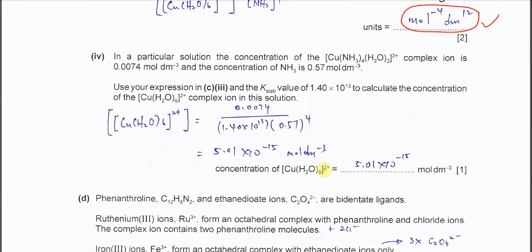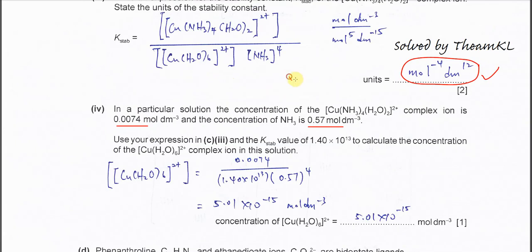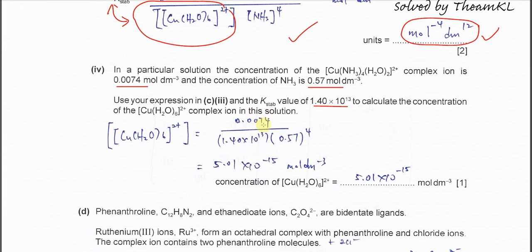Part four: in a particular solution, the concentration of the tetraamine diaqua copper(II) ion is 0.0047 mol dm⁻³ and the concentration of ammonia is 0.57 mol dm⁻³. Using the Kstab expression from part three and the given Kstab value, rearrange to calculate the concentration of the hexa aqua copper(II) ion. Substituting the values gives a concentration of 5.01 × 10⁻⁹⁵ mol dm⁻³.